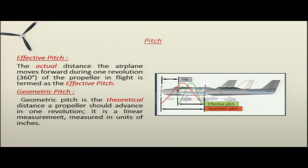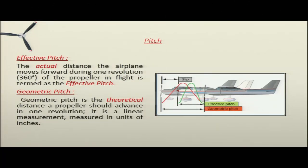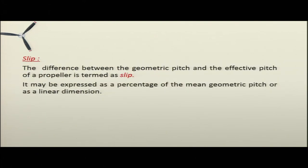There are two types of pitch: effective pitch and geometric pitch. Effective pitch is the actual distance the airplane moves forward during one revolution of the propeller in flight. Geometric pitch is the theoretical distance a propeller should advance in one revolution — it is a linear measurement in inches. Slip is the difference between the geometric pitch and the effective pitch of a propeller. It may be expressed as a percentage of the mean geometric pitch or as a linear dimension.